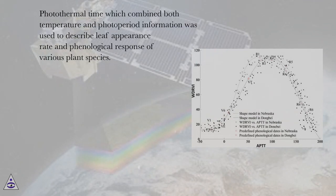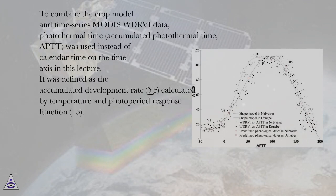Photothermal time, which combined both temperature and photoperiod information, was used to describe leaf appearance rate and phenological response of various plant species. To combine the crop model in time series MODIS WDRVI data, photothermal time, accumulated photothermal time (APTT), was used instead of calendar time on the time axis in this lecture.